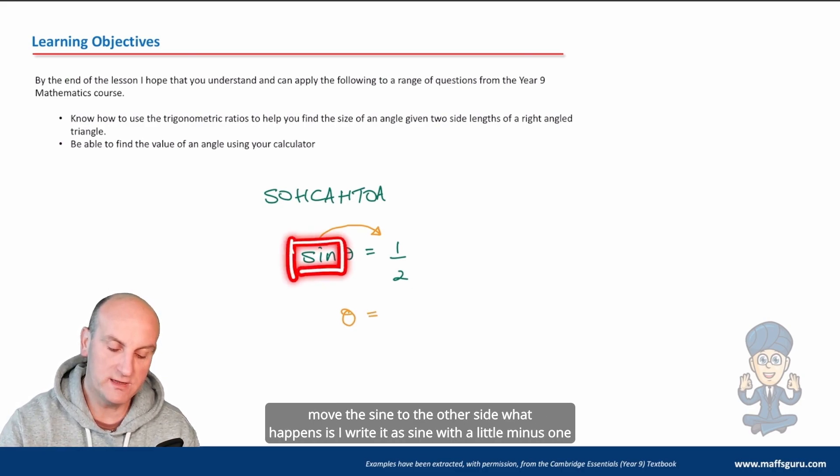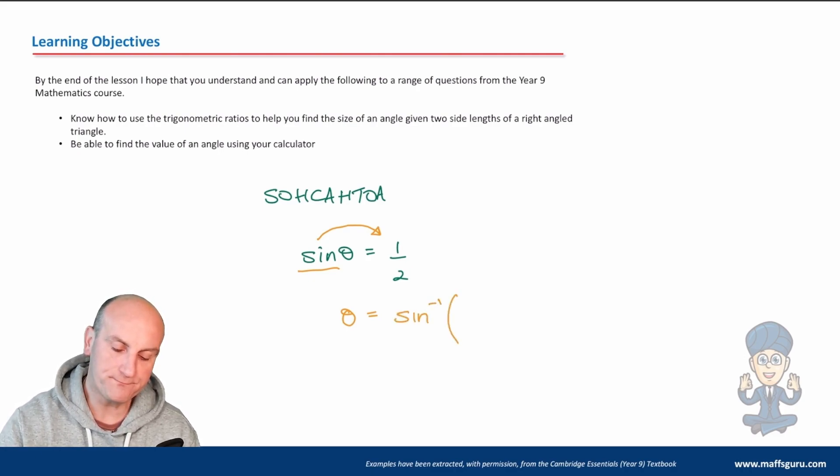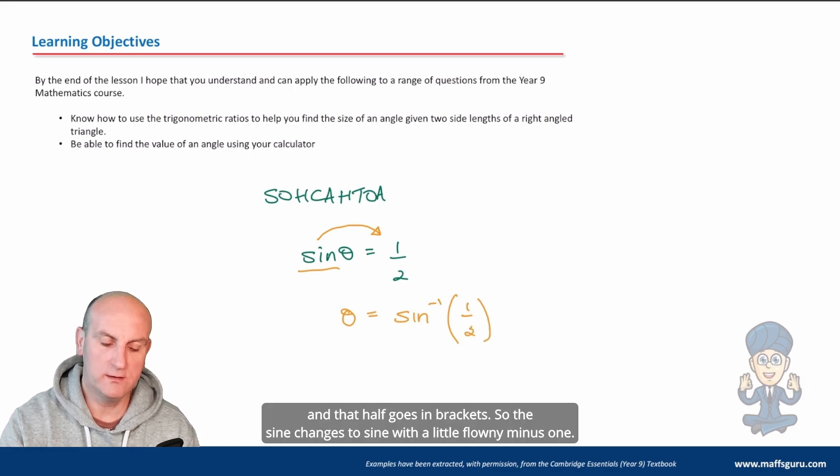What we do is use something pretty funky and I say theta is equal to. Now when I move the sine to the other side, what happens is I write it as sine with a little minus one. And that half goes in brackets.